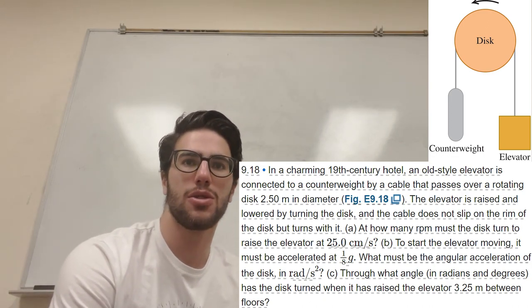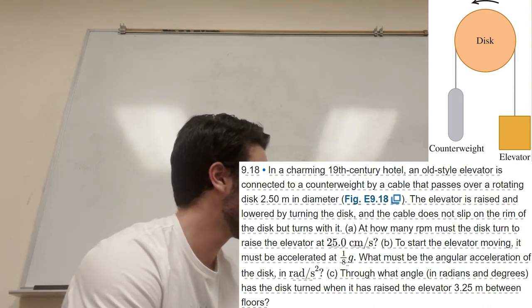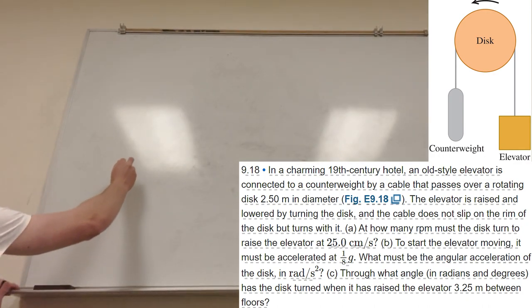What's up, Cal gang? All right, we got this cool problem. So in a charming 19th century hotel. Okay, so I'll just try it out, basically. So you've got this disc, and its radius is like 2.5, I think, meters. And you're pulling up this elevator, right?